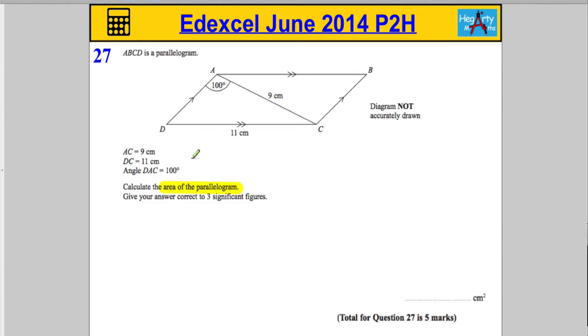Now, I'm a little bit suspicious because we're right at the end of the paper. We've got angles and sides and not only do I see parallelograms, I see triangles. So I'm thinking trigonometry.